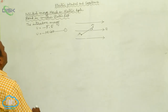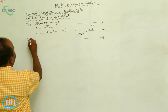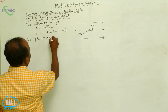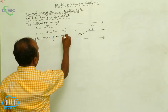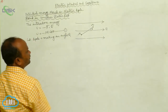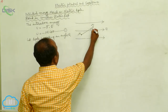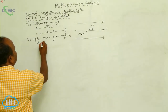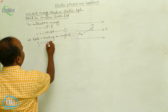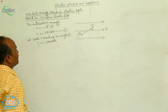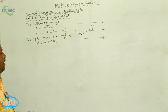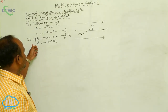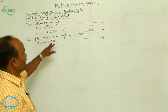Let the dipole make an angle theta 1 with respect to the electric field intensity. The initial interaction energy is U₁ equal to minus PE cos theta 1.